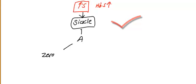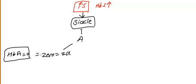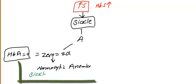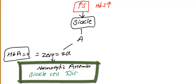Now, when you see hemoglobin S increased in the blood, this indicates sickle cell. The next step is to look at hemoglobin A. If hemoglobin A equals zero — meaning two alpha equals zero — and on the blood film you see normocytic anemia, you call this sickle cell disease.